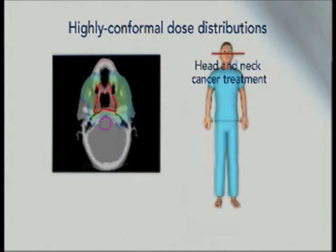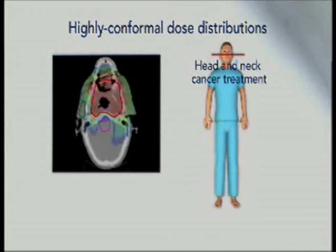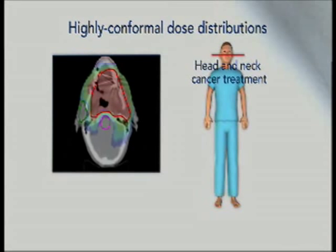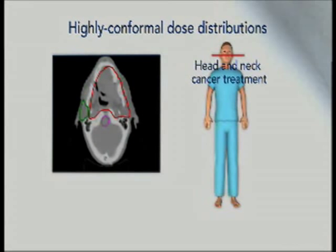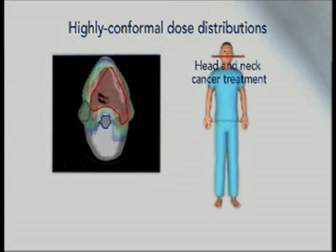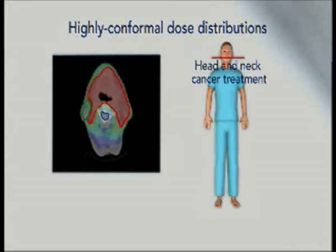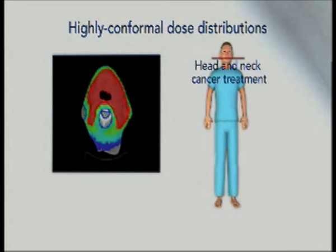Shown here are CT scans with overlaid structures and dose levels from a head and neck cancer treatment plan. The tumor, indicated by the red outline, is covered by the prescription dose, shown by the solid red color. The adjacent blue spinal cord and green parotid gland receive a very low dose. Our unique technique enables a sharp distinction between tumor dose and dose to nearby critical tissues. The parotid glands produce saliva, and maintaining their function after radiotherapy treatment has always been a difficult challenge.